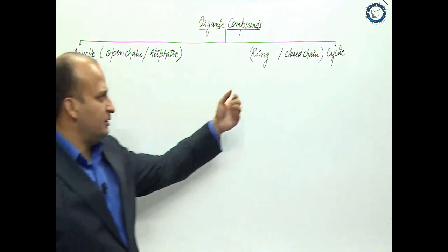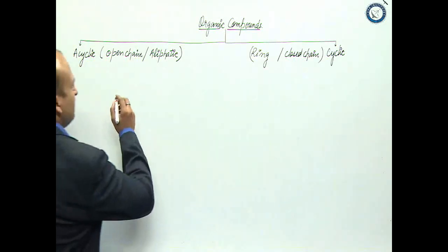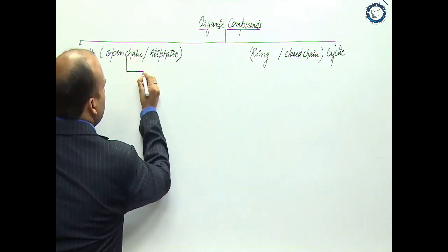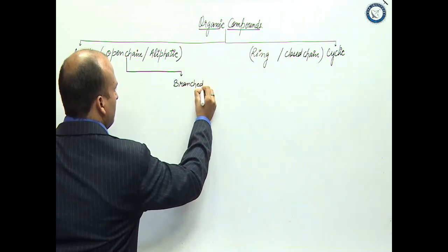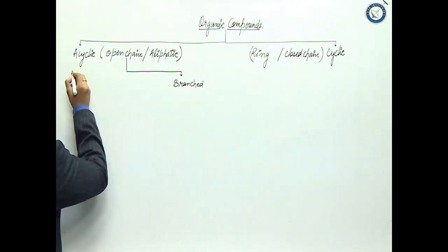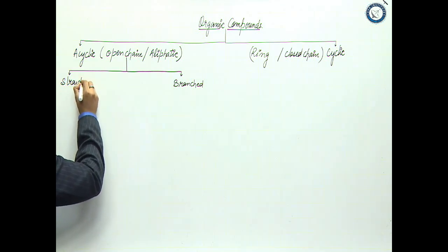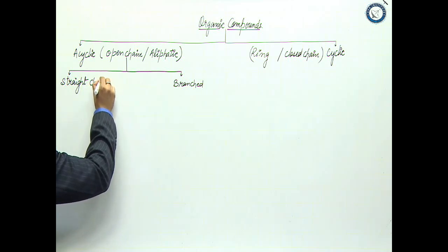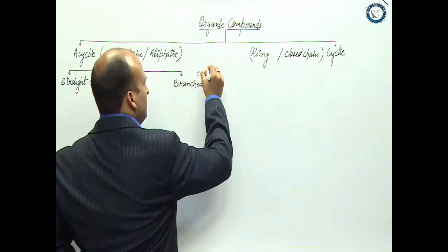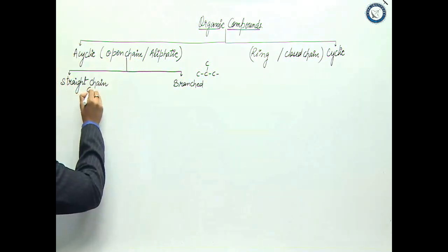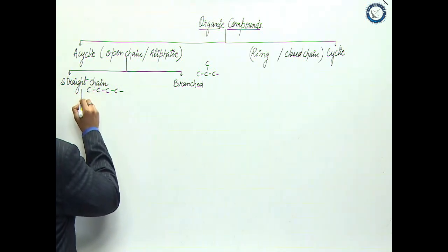First, we will talk about acyclic compounds. So here we have two possibilities. The first possibility is straight chain, and the second possibility is branched chain. I'll give you a small example here - you can see this branching versus simple straight chain.